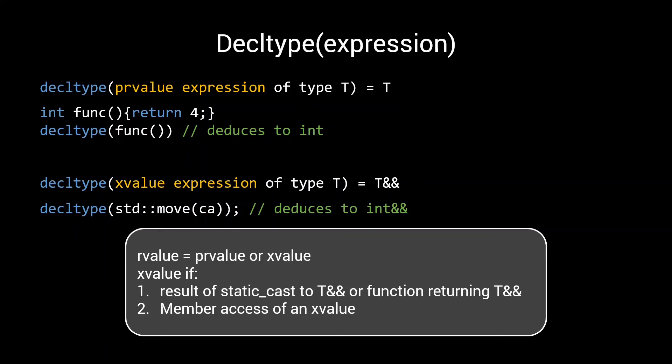You're dealing with an xvalue if you're dealing with the result of a static cast to an rvalue reference or a function returning an rvalue reference. Or secondly, if you already have an xvalue and you access a member of that xvalue, that member is also an xvalue. If you're not in one of these two cases, you're dealing with a pure rvalue.